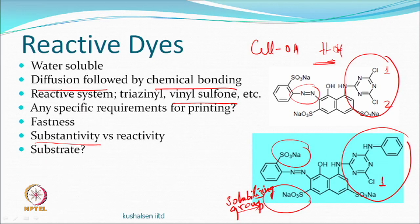Substrates for reactive dyes are cellulosics — cotton, viscose, rayon — though reactive dyes were initially synthesized for these. However, all reactive dyes can also dye protein fibres and nylon very easily. The end amino groups are sufficient for reaction and do not require alkaline medium, so hydroxyl groups — and therefore water — will not react, giving less hydrolyzed dye.